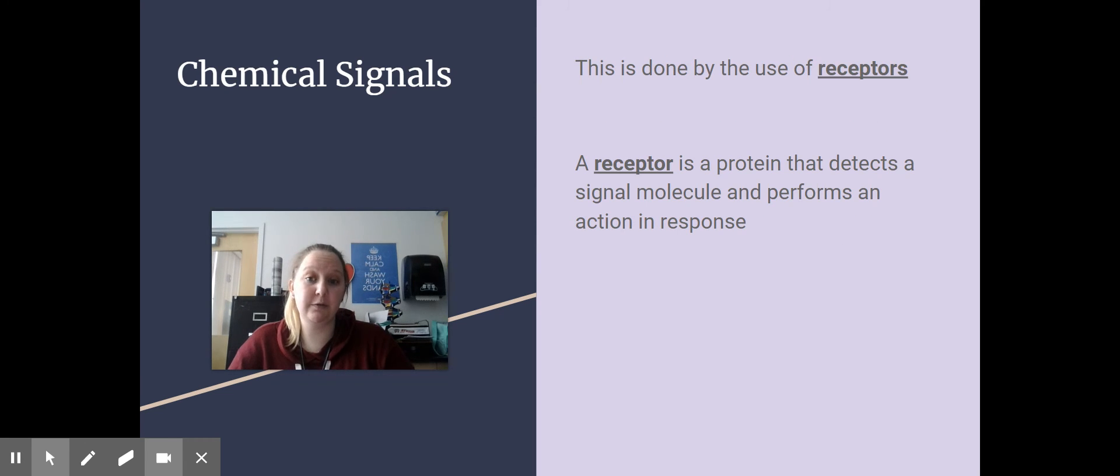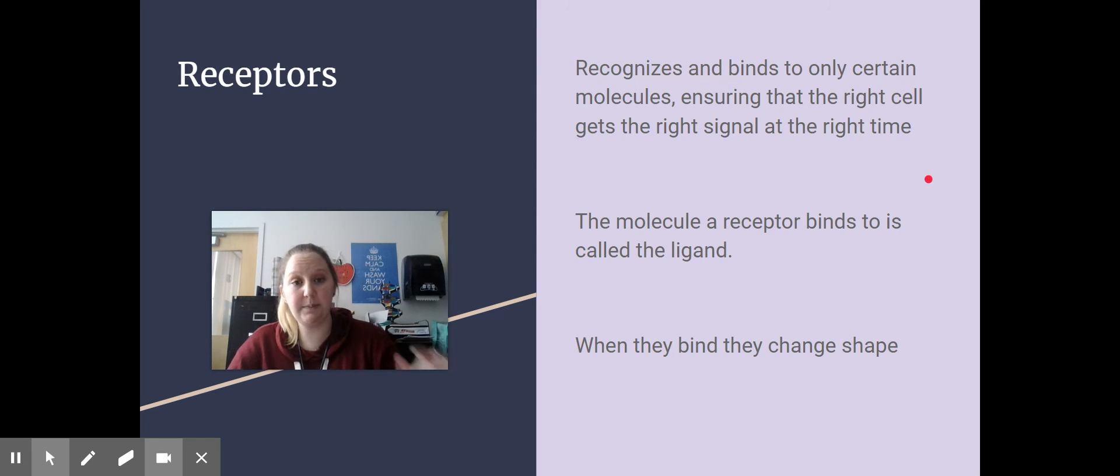This is done by the use of receptors. A receptor is a protein that detects a signal molecule and then performs an action in response. Receptors recognize and bind to only certain types of molecules, ensuring that the right cell gets the right signal at the right time.